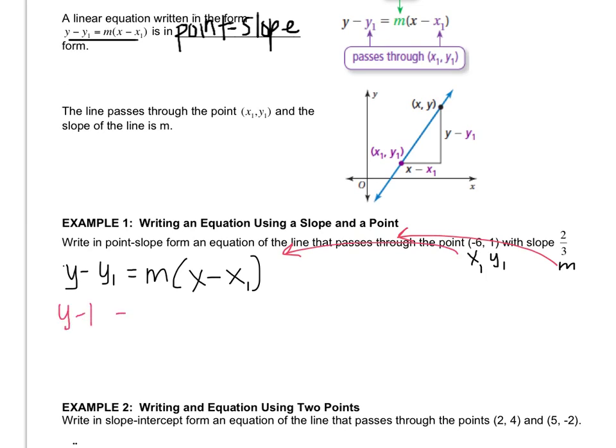So y minus 1 equals negative 6 times—oh, nope, not negative 6, the slope is 2/3—times x minus negative 6. And x minus negative 6 is the same as x plus 6, so I'll write that instead. And this is all they want. It's in point-slope form using that information.